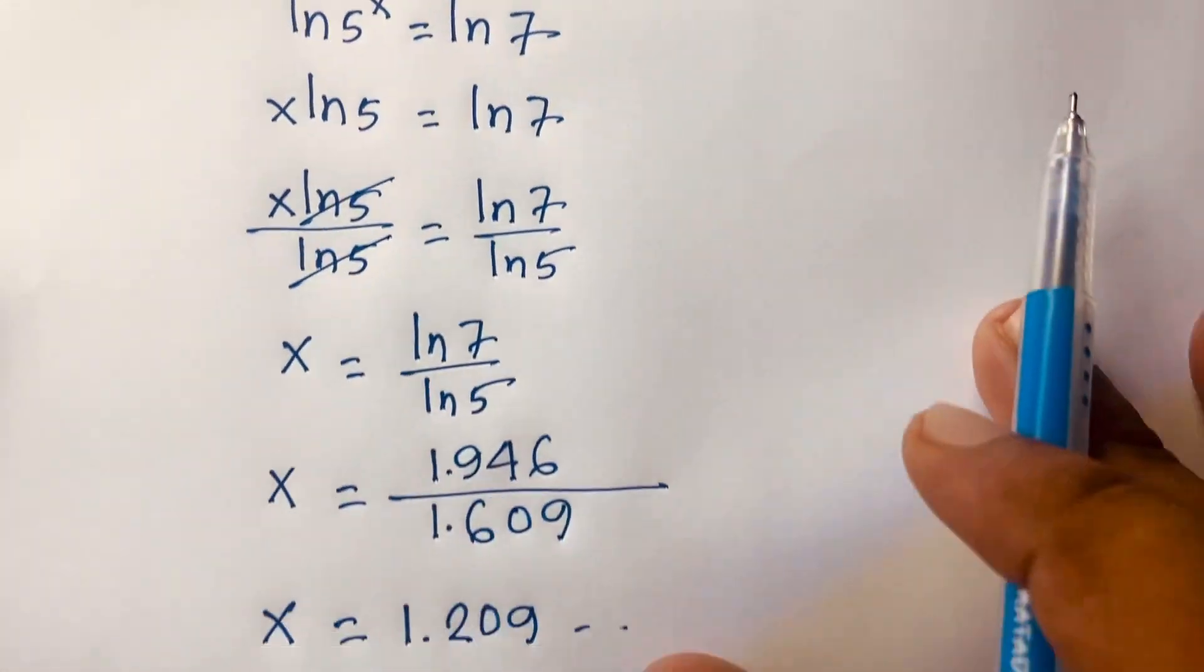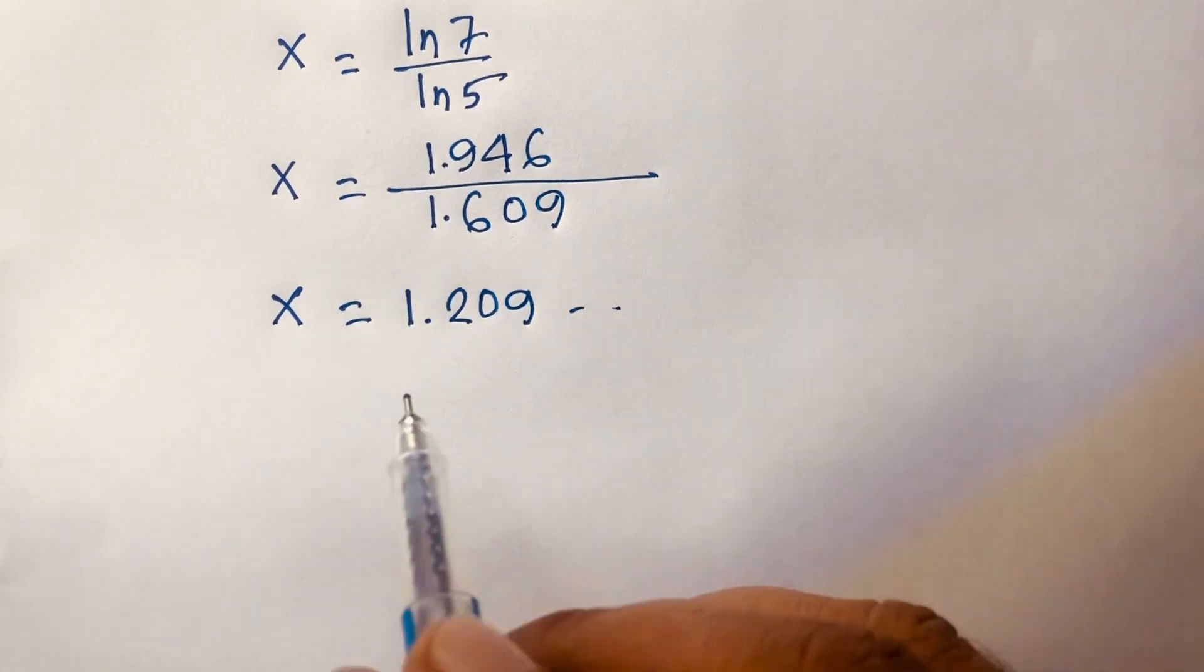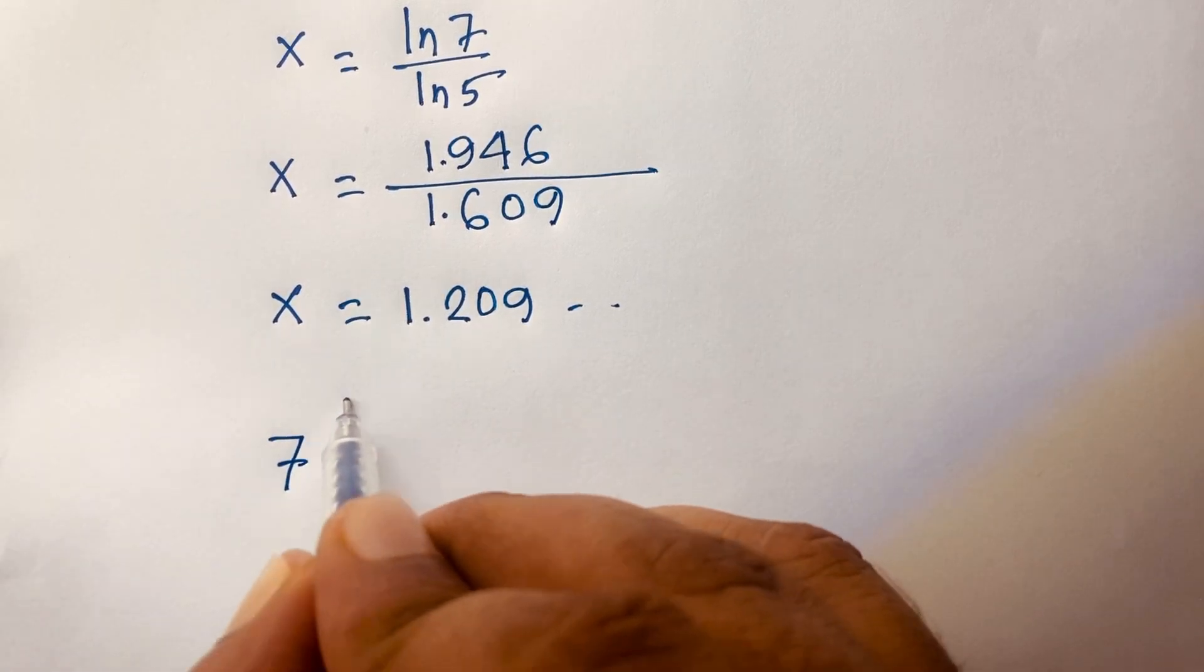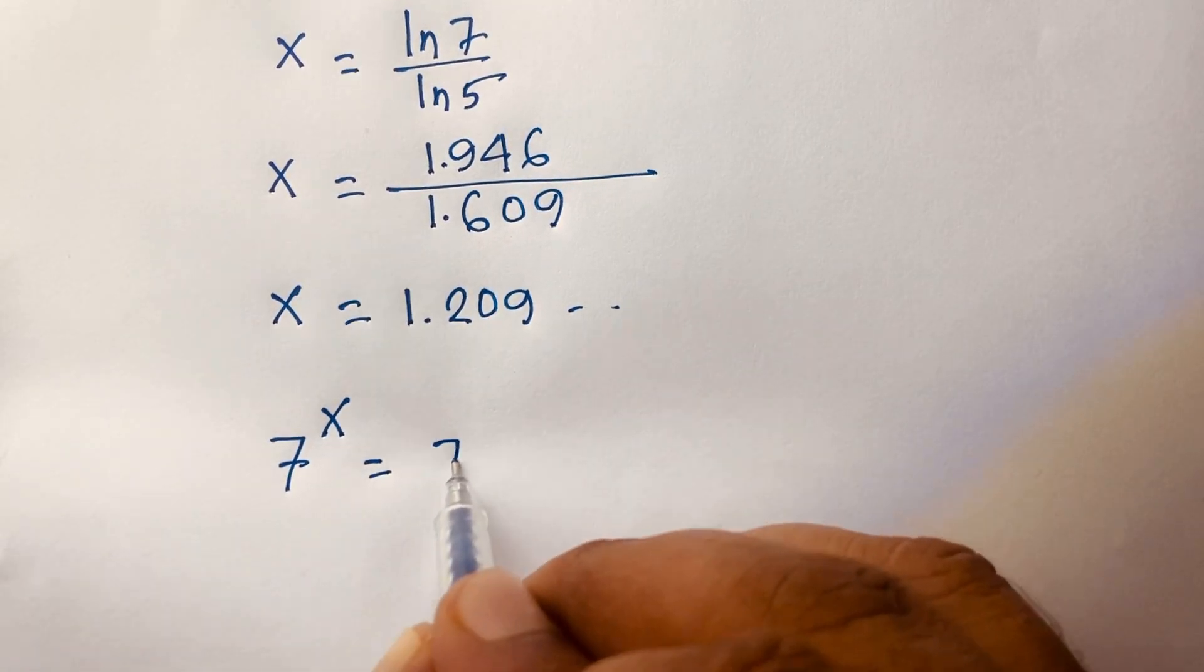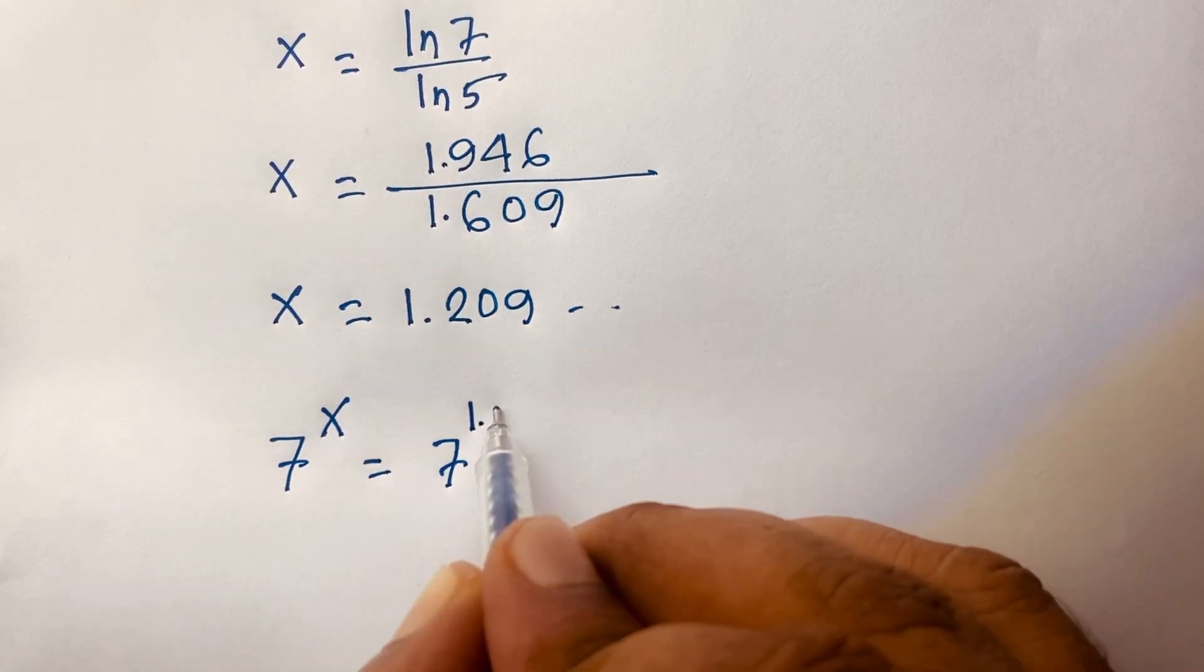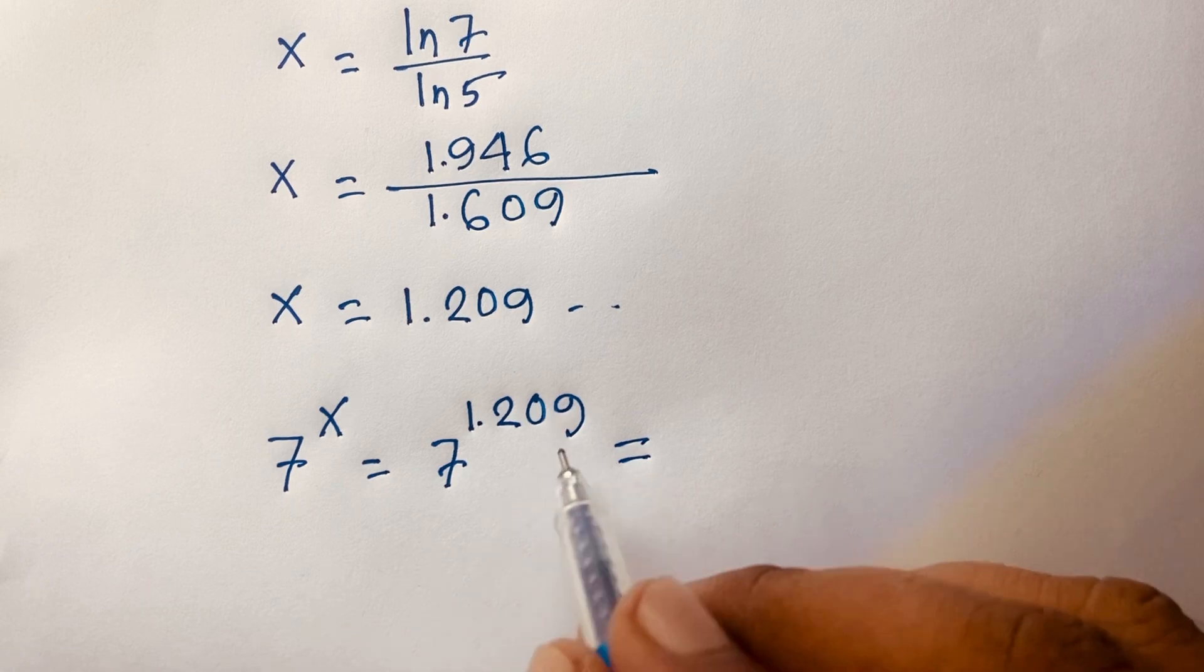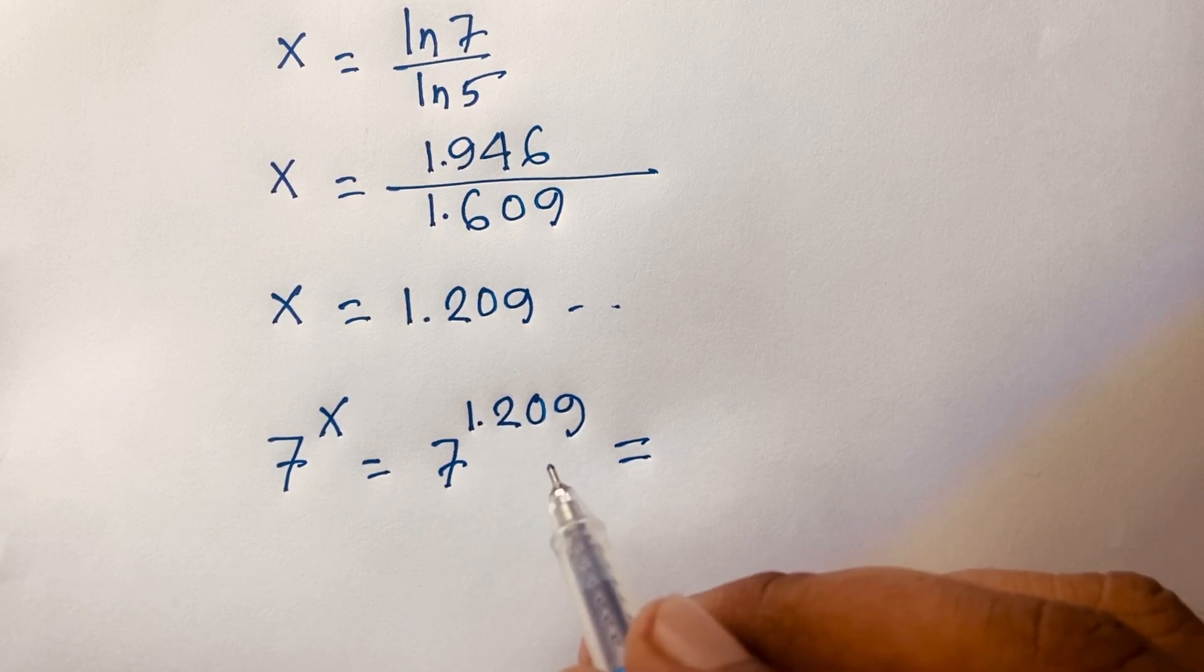But remember that x is equal to 1.209. So I can say 7 to the power x, and here is 7 to the power x, it will be 1.209. So in this case if I use calculator, this value is 10.51.